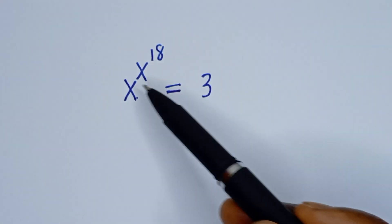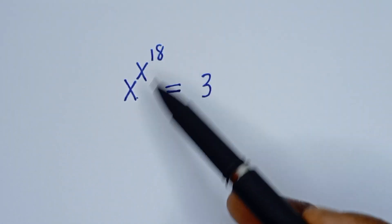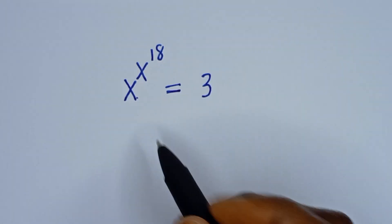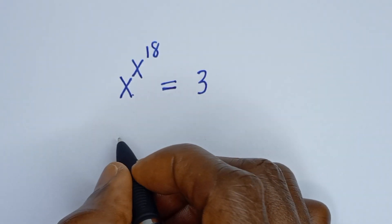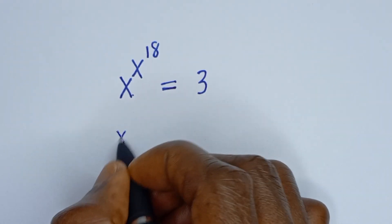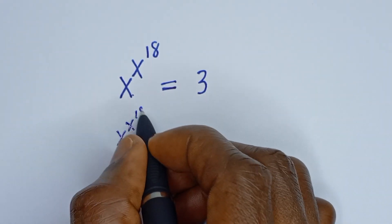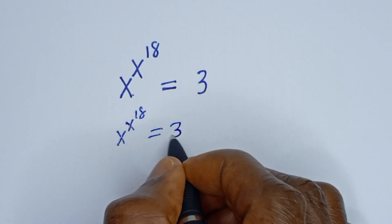How to solve for x from this given equation: x to the power of x to the power of 18 is equal to 3.